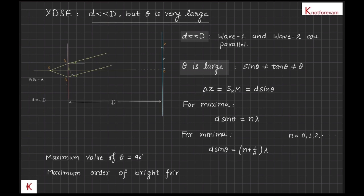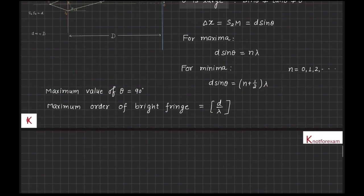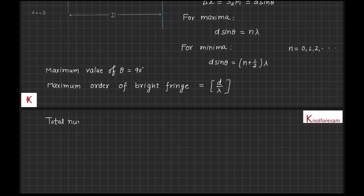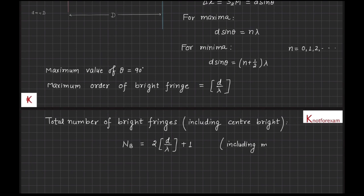Therefore, maximum order of bright fringe will be greatest integer of d upon lambda. Therefore, total number of bright fringes, including center bright fringe and including maxima at infinity, will be equal to twice of greatest integer of d upon lambda plus 1.